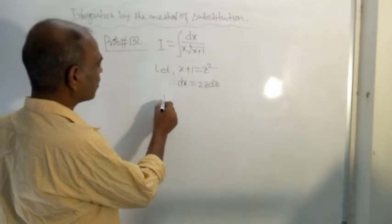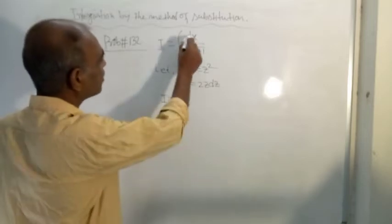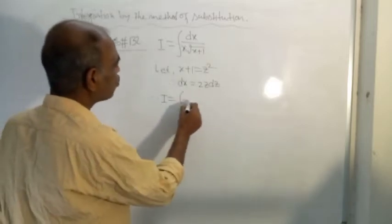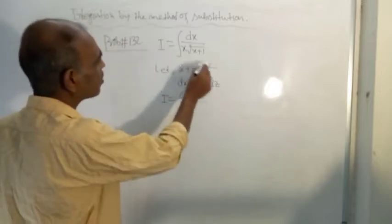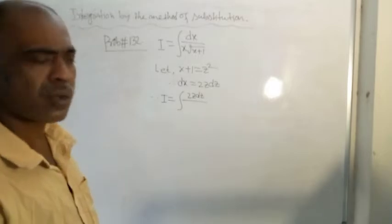Therefore, integration I equals what? dx will be replaced by 2z dz, and x will be replaced by z squared minus 1.